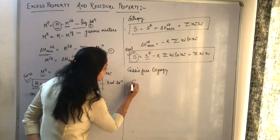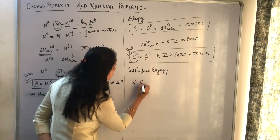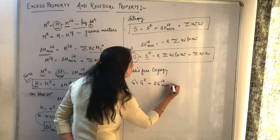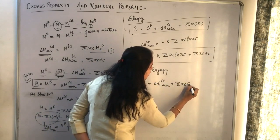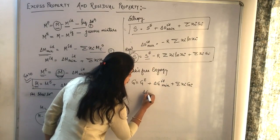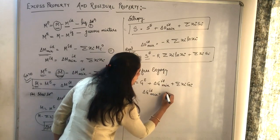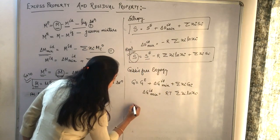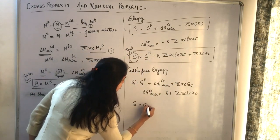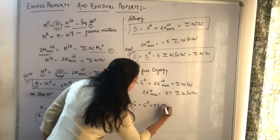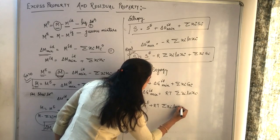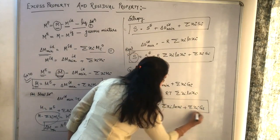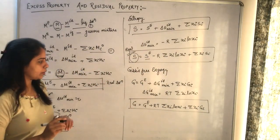Now write the same equation for Gibbs free energy. The general form is: g equals g_excess plus delta_g_ideal_mixture plus summation of xi*gi. The change in Gibbs free energy for an ideal mixture is given by RT summation of xi*ln(xi). Substituting, g equals g_excess plus RT summation of xi*ln(xi) plus summation of xi*gi. With this relation you can find the Gibbs free energy of the solution.